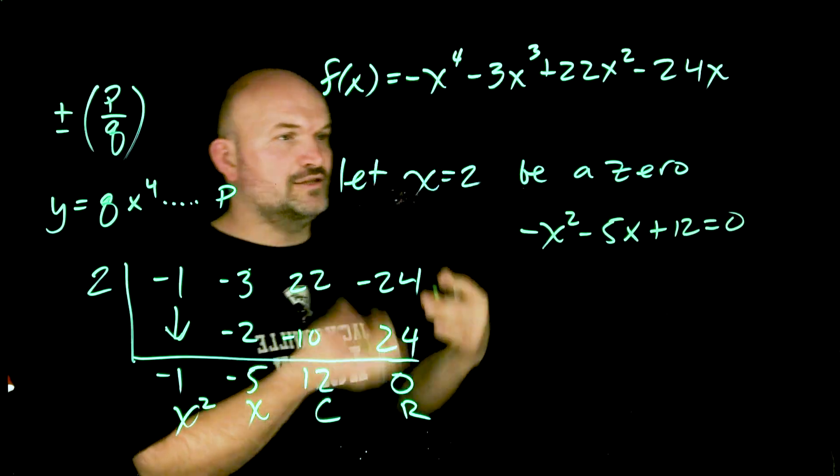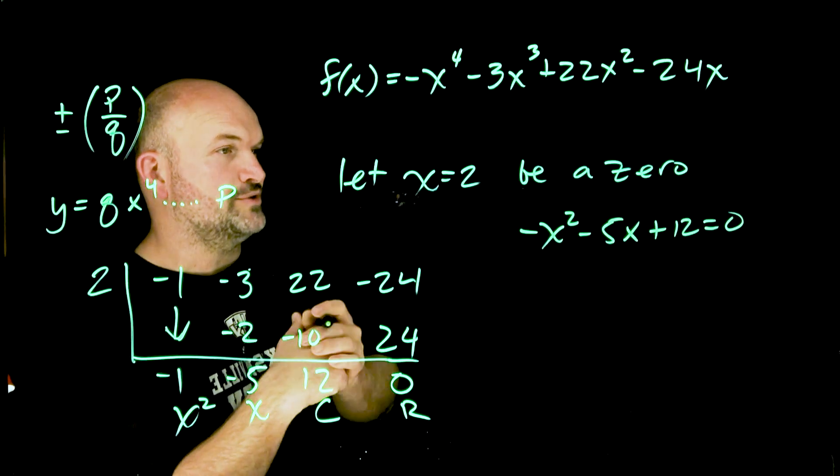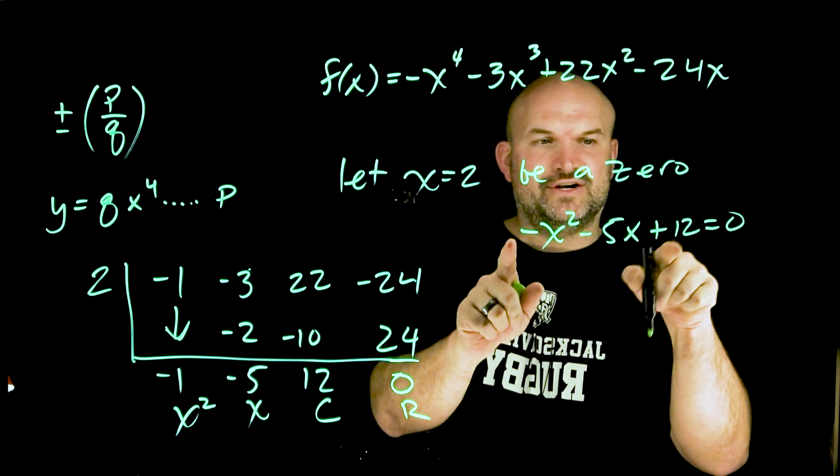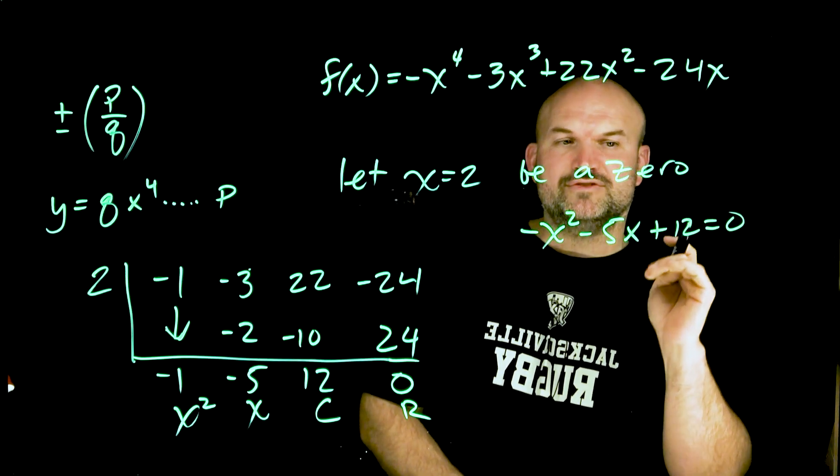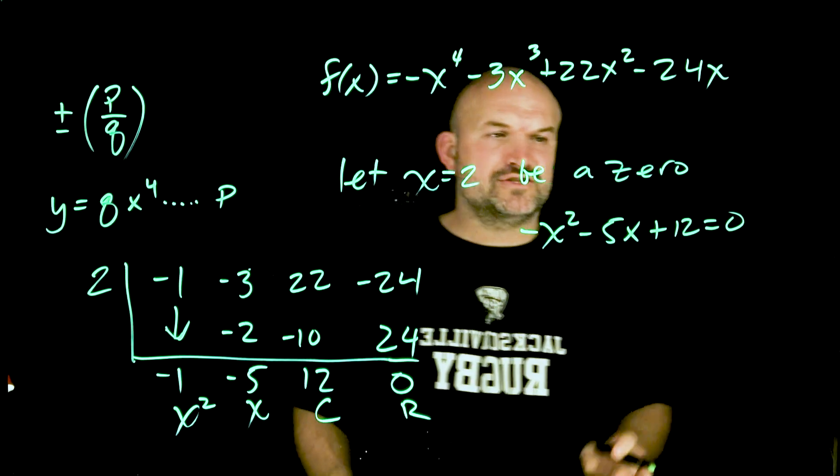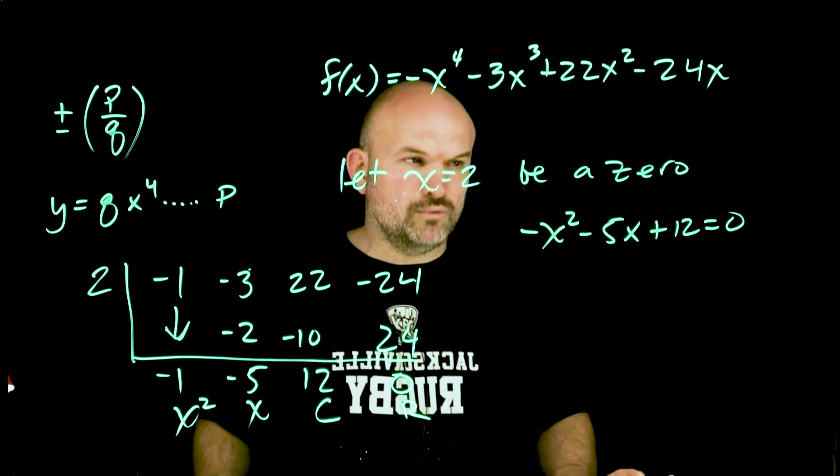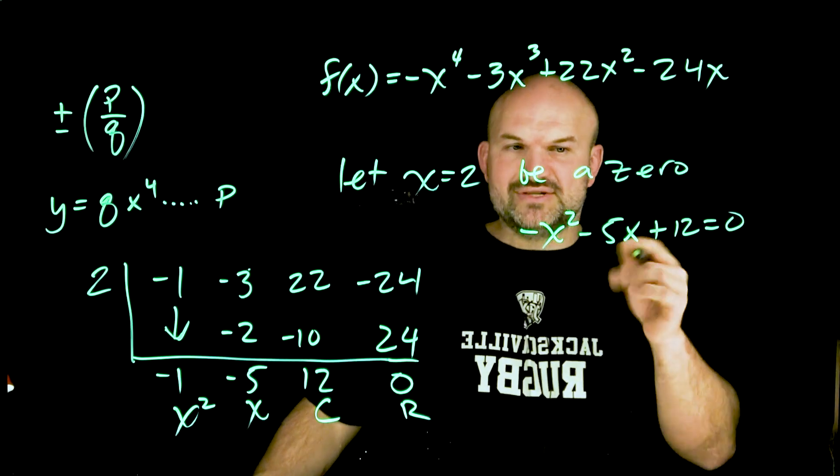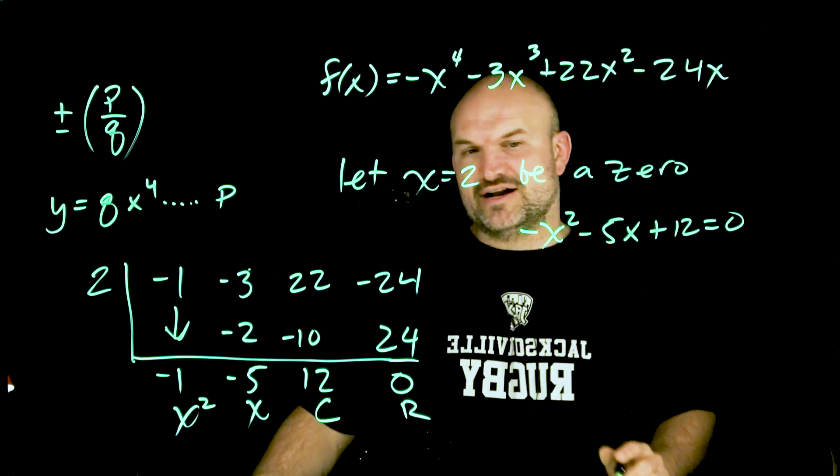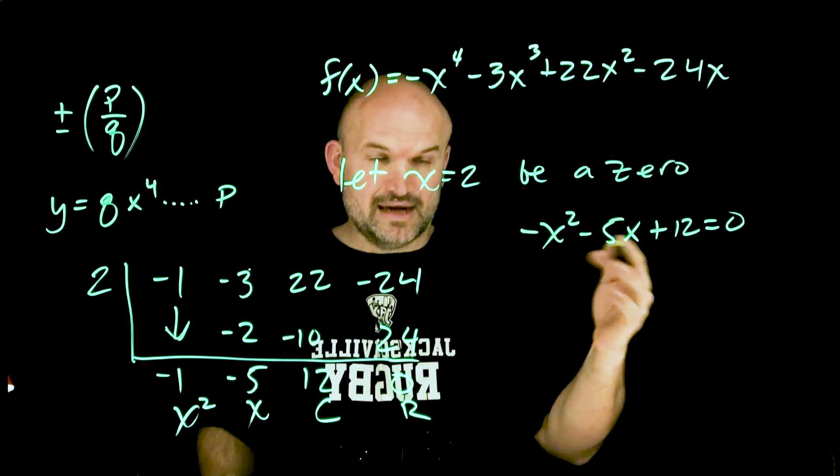Now I always like to look to factoring before I try doing completing the square or quadratic formula. If I factored out a negative here I would have negative 12, that means my factors of 12 I would be looking for a difference that would give me a positive 5. Well the factors of 12 are 2 and 6, 12 and 1, and 4 and 3. None of those have a difference of 5, so therefore I can already determine that this is not factorable. So to solve this I'm going to have to use the quadratic formula.